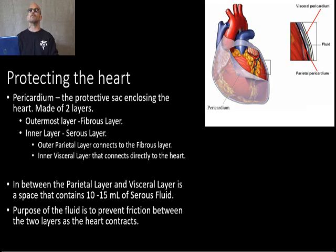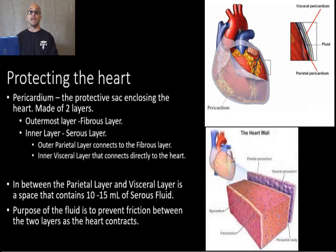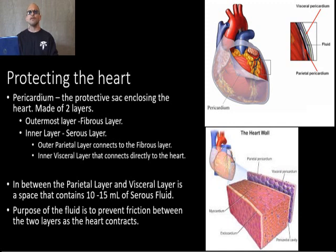The heart is enclosed by a protective sac called the pericardium. This sac is made up of two layers. The outermost layer is a tough fibrous layer, and the inner serous layer is further divided into two layers: the outer parietal layer that connects to the fibrous layer, and the inner visceral layer that is attached directly to the heart. In between the parietal layer and the visceral layer there is a space called the pericardial cavity, with about 10 to 15 milliliters of fluid. This fluid lubricates the space and prevents friction between the layers during contraction of the heart.